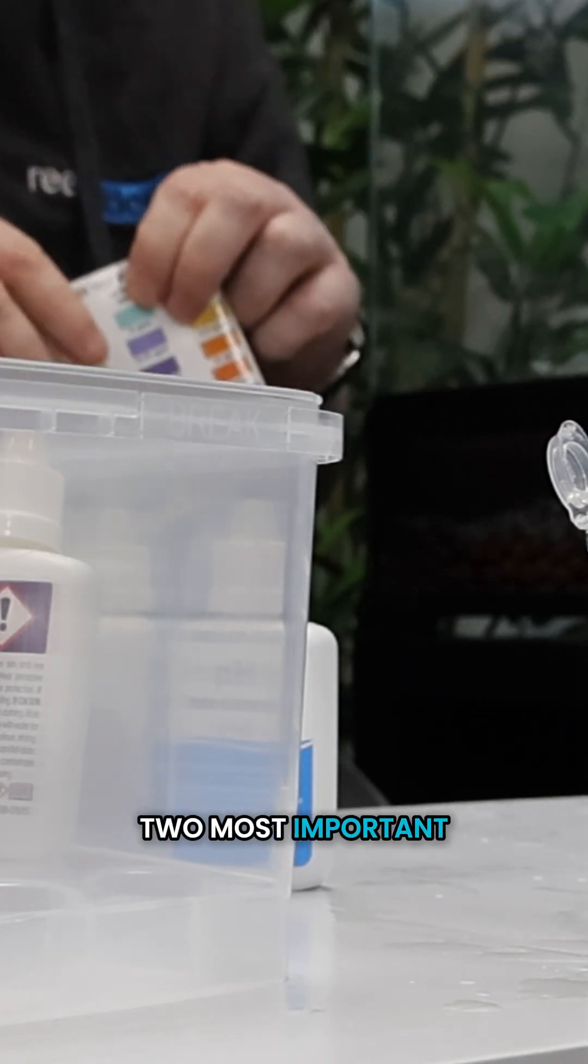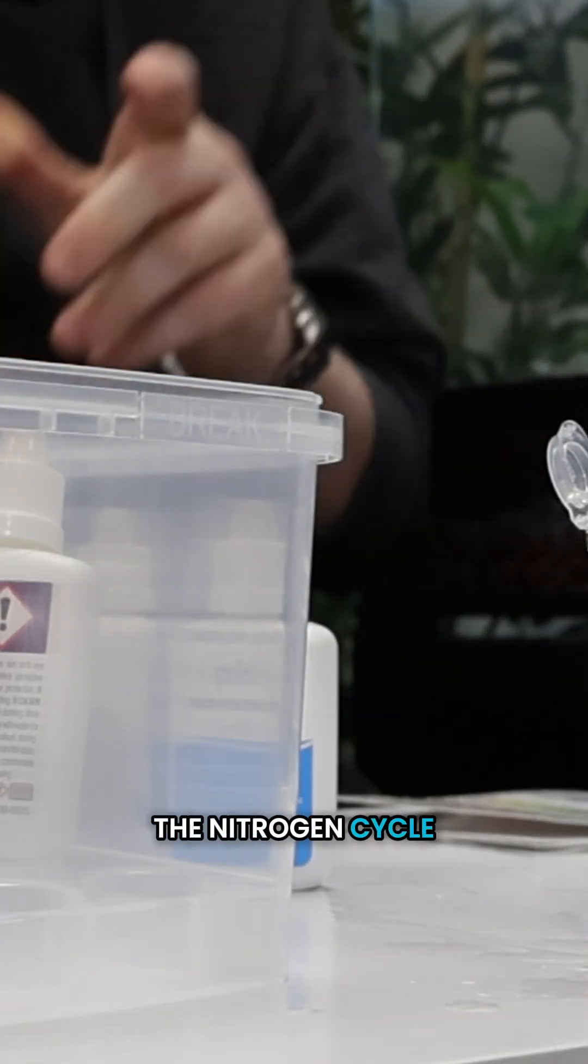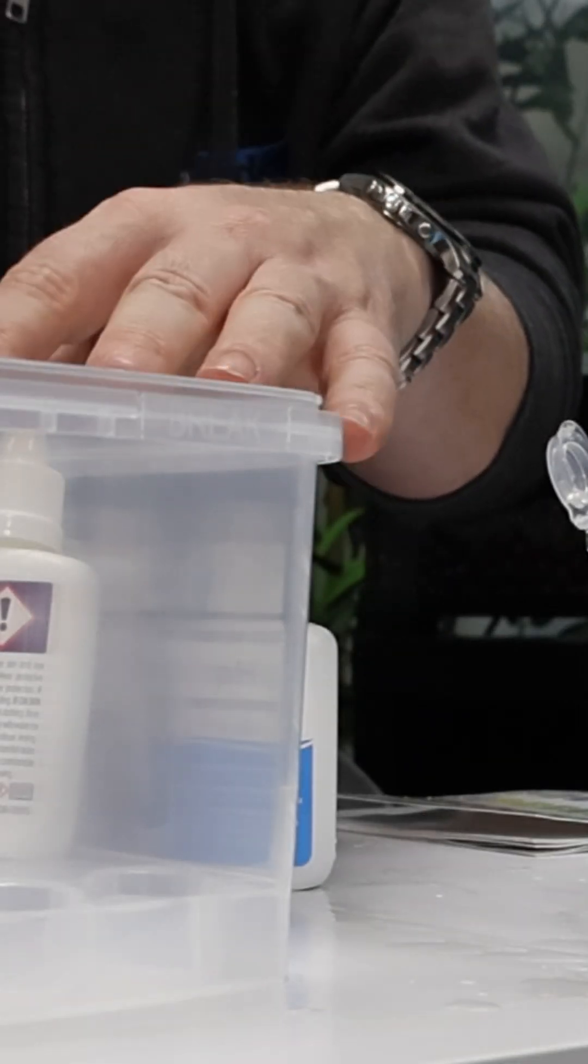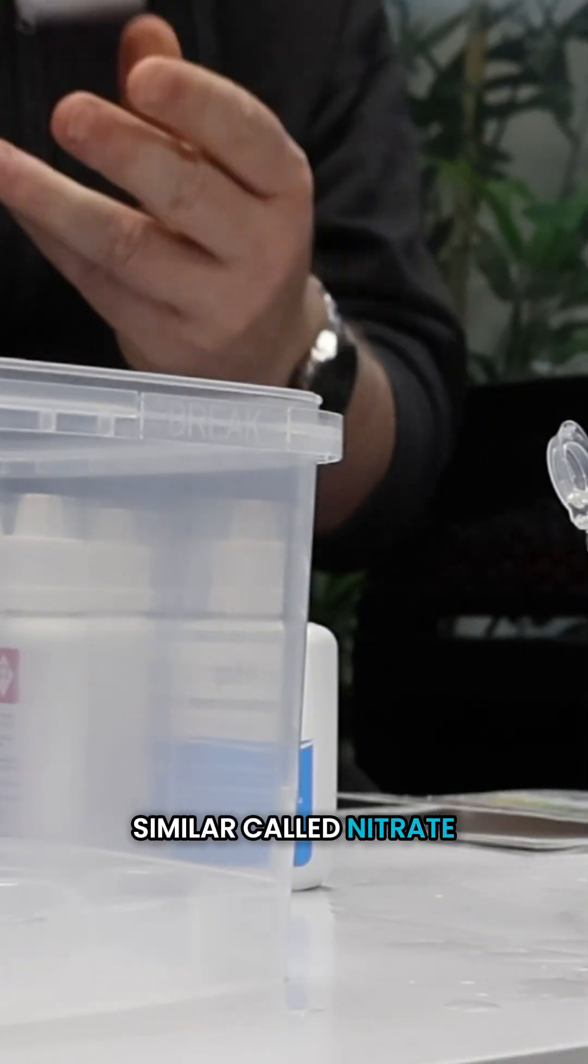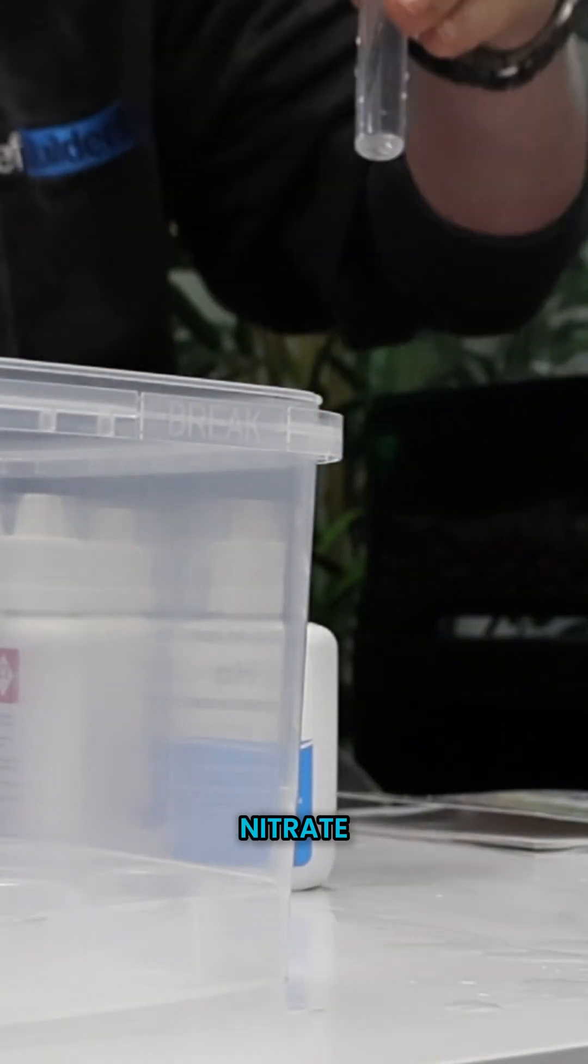And then finally, as part of the nitrogen cycle, those nitrite-converting bacteria convert into something sounding similar called nitrates. Nitrate is a byproduct. It's a lot less toxic than nitrite, but even so we still test for it. So 10 drops of bottle one.